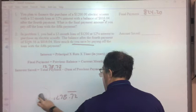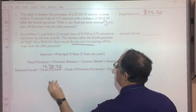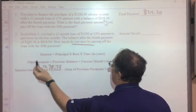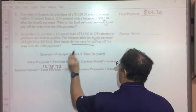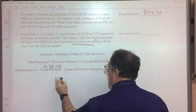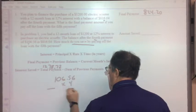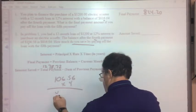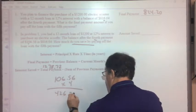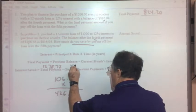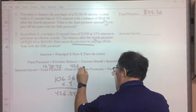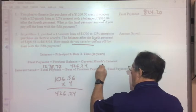Next part of the formula is, how much have I already paid on regular monthly payments? $106.56 is the monthly payment. I've already paid four months. So how much I've already paid normal is $426.24.